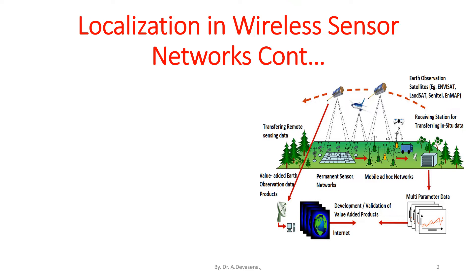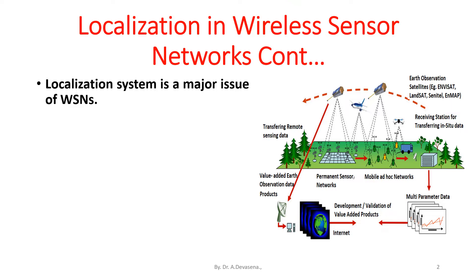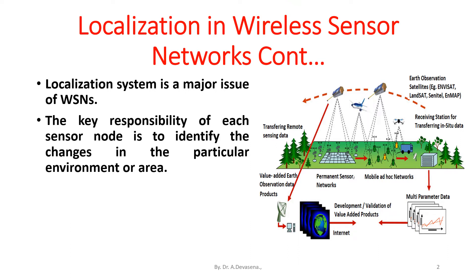Localization system is a major issue of wireless sensor networks. The key responsibility of each sensor node is to identify the changes in the particular environment or area. Certain applications require the information received from sensor nodes with accurate positional information of the event occurred.